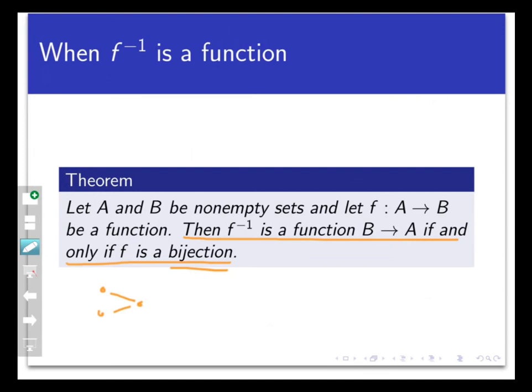Let me stress again that F inverse always exists, okay? You can always form F inverse because it's just a set of ordered pairs that you get by reversing the order of the pairs in F. It's just that F inverse may not have all the ingredients to be a function. That only happens when F is bijective.